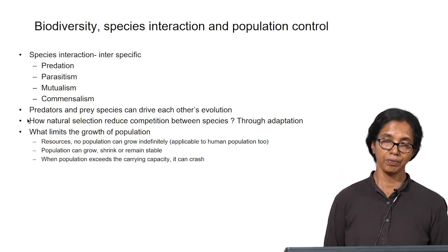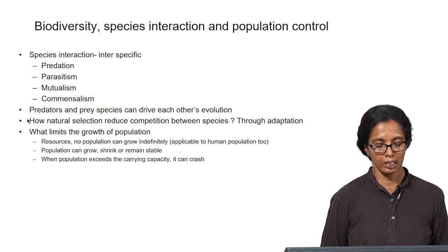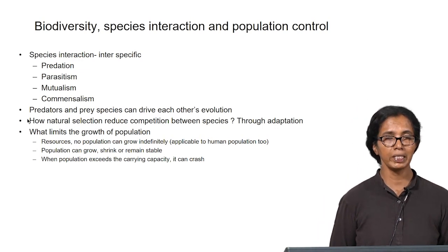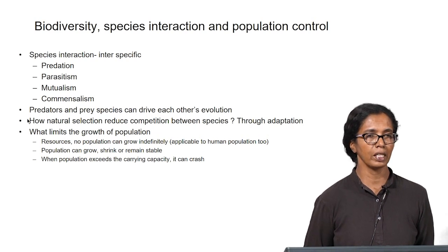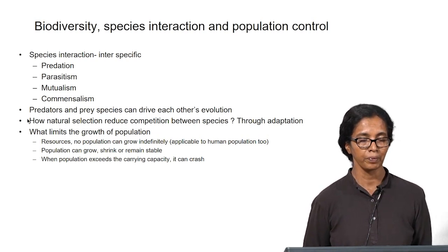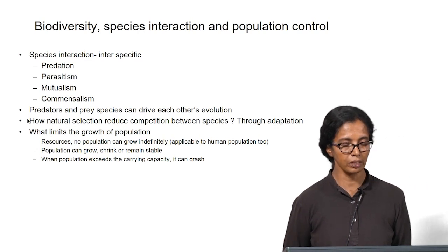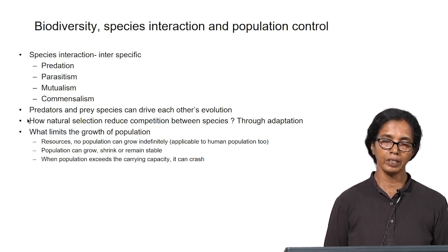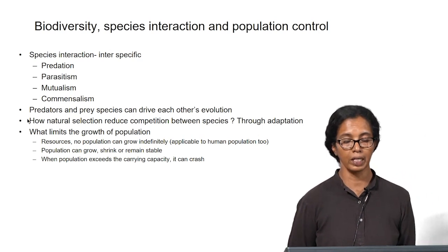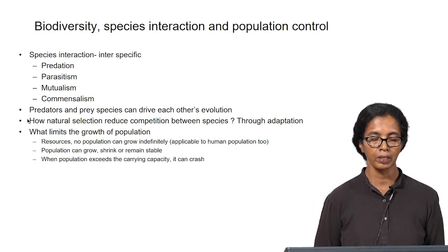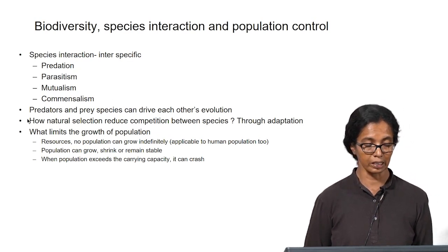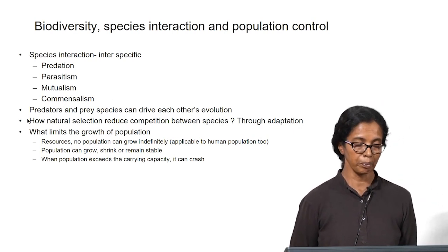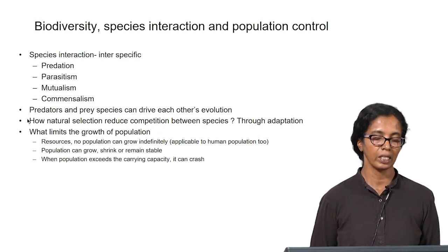In the absence of competition, what limits population growth is resource availability — especially food, as well as nesting facilities and habitat. No population can grow indefinitely; this applies to human populations too, as resources shrink as population keeps increasing. Population can grow, shrink, or remain stable depending on resource availability, and when a population exceeds the carrying capacity it can crash.